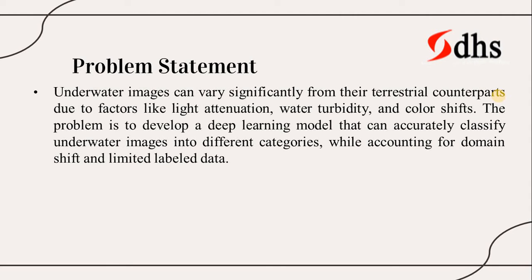Regarding the problem statement: underwater images can vary significantly from their terrestrial counterparts due to factors like light attenuation, water turbidity, and color shifts. The problem is to develop a deep learning model that can accurately classify underwater images into different categories while accounting for domain shift and limited labeled data. Collecting a massive amount of similar-pattern data is very difficult, but with fewer samples per target we can perform data augmentation to increase the number of images and achieve better results.